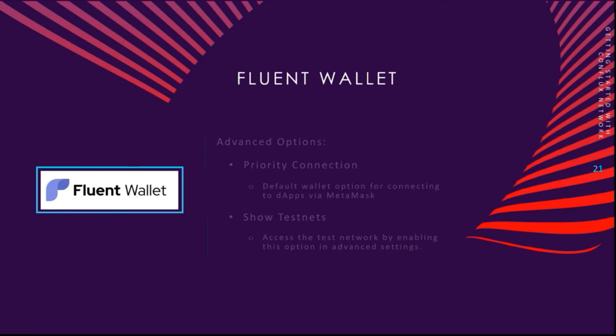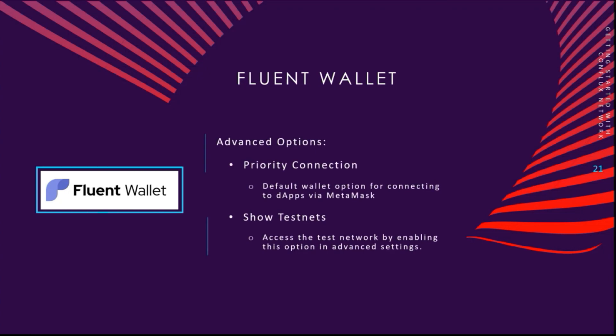Some things you need to know about Fluent are its advanced options. For example, if you also have MetaMask installed on your browser, you might have issues with priority. You just need to go to advanced options and select the priority connection, so the application you are connecting with prioritizes Fluent instead of MetaMask. Also, access to Testnet is disabled by default because most people don't use it — it's mainly for professionals and developers. You can enable it in the advanced options. It also allows you to connect to a hardware wallet like Ledger.